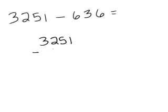This time the second number is going to go below the first number, and I want to make sure that I line up the place values. So the 1 and the 6 are both sitting in the ones place, so they line up. The 5 and the 3 are both sitting in the tens place, so they line up, and the 2 and the 6 are both sitting in the hundreds place, so they line up.